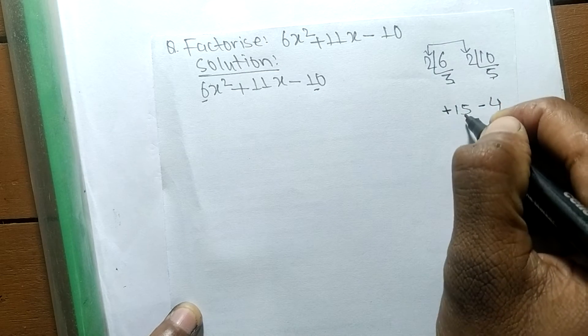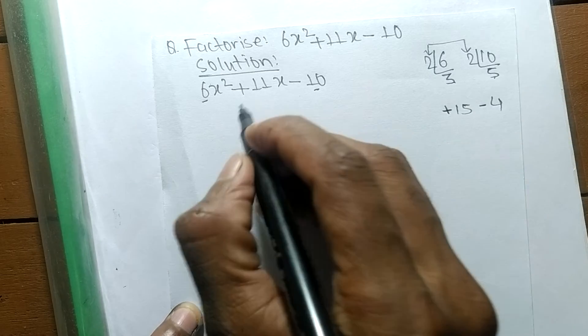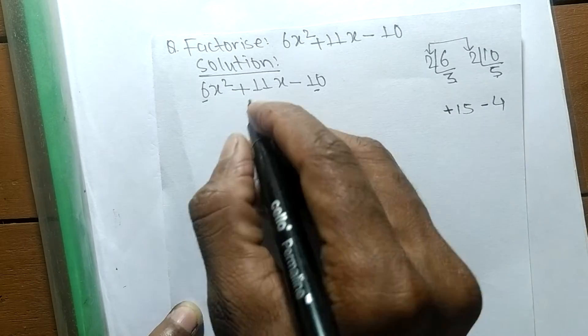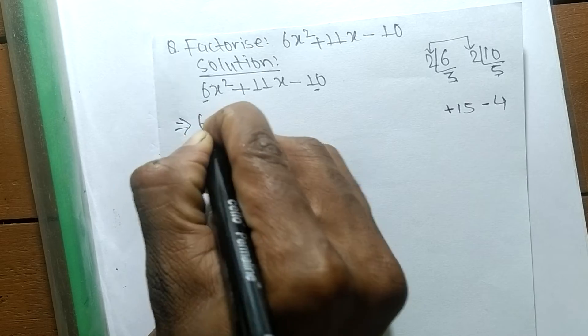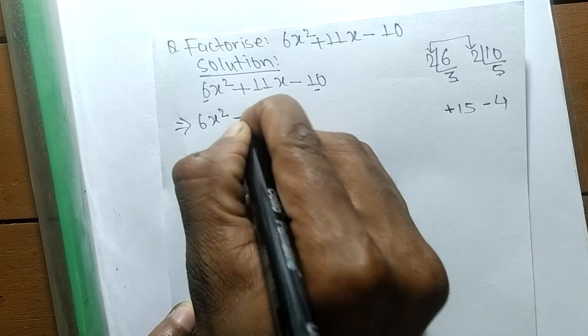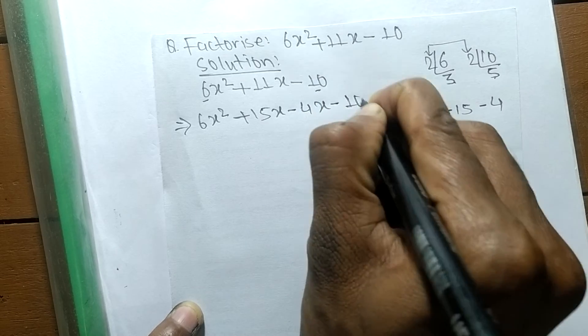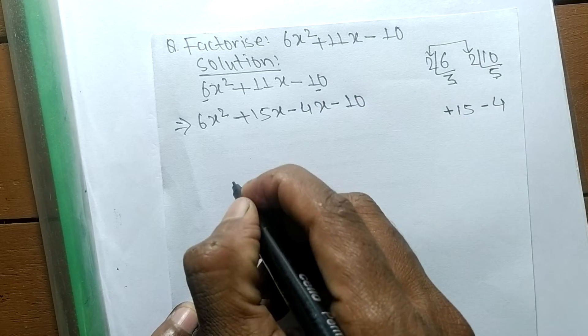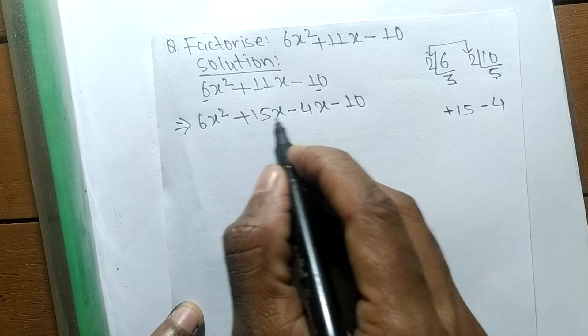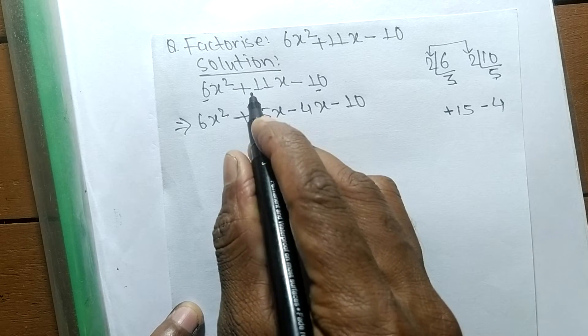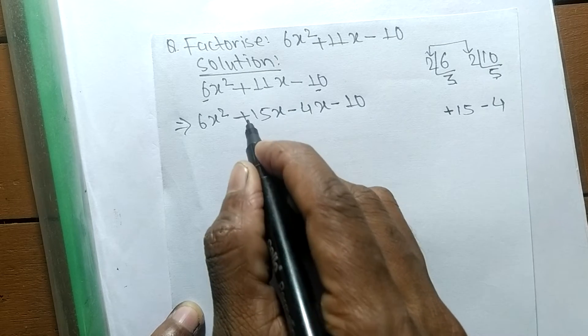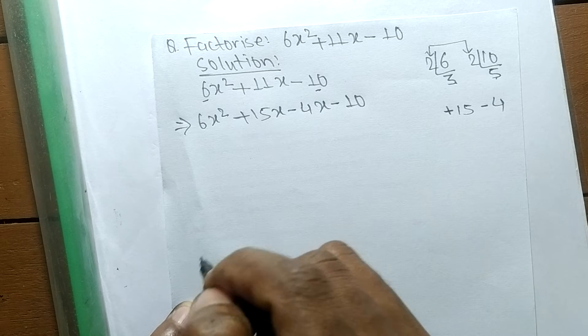So we can write it as 6x² + 15x - 4x - 10. Now +15x - 4x means it is +11x, and plus minus equals minus.